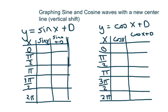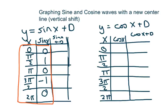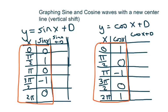You still need to remember these key values. For sine, it starts at 0 and the values are: 0, 1, 0, negative 1, 0. For cosine, you need to know these: it starts at 1 and goes 1, 0, negative 1, 0, 1.